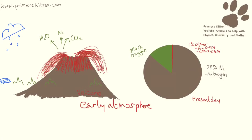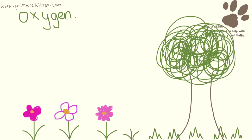Lots of things had to happen to get from that early situation to today's atmosphere. When simple green plants like algae evolved, they used the sun to make their own food. They took in all the carbon dioxide that was in the atmosphere and turned it into oxygen, and to do this they used photosynthesis.